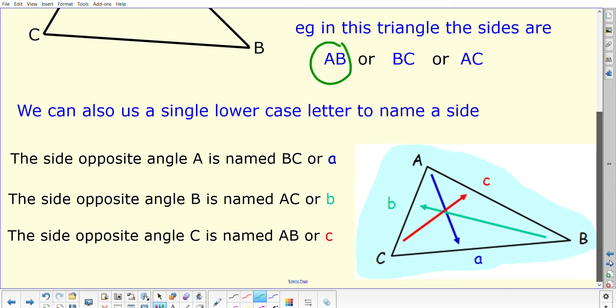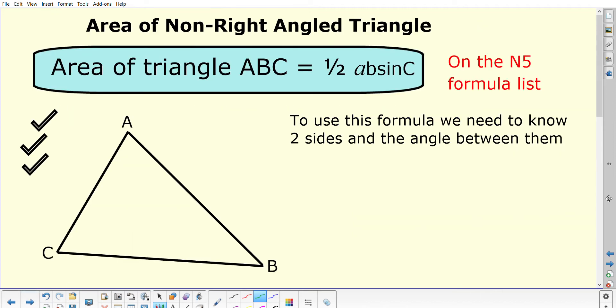Alternatively, we can also use a single lowercase letter to name a side. The way this works is the side opposite to the capital letter—so if we've got capital A at one corner, the opposite side gets the lowercase letter a. You could name this side using capital letters BC, or we can use the little letter a. Consequently, opposite angle B you've got lowercase letter b, and opposite C lowercase letter c. The lowercase letters are what appear in the trig formulae we'll be using, and it's these lowercase letters that are used to refer to the side.